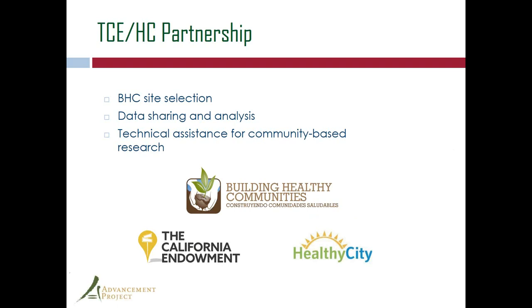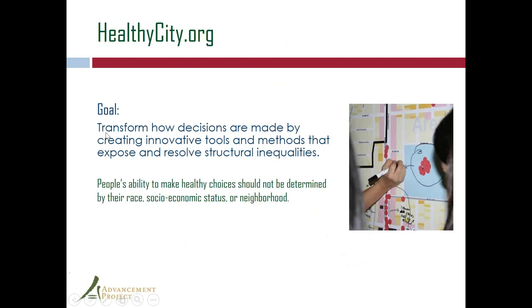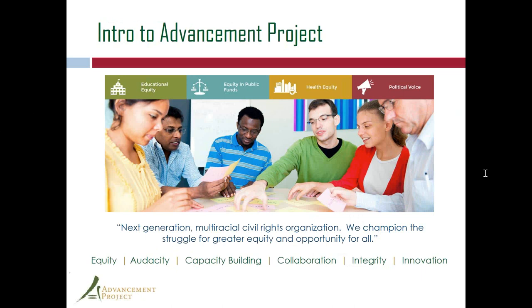So just briefly, an introduction to Advancement Project. We are a next-generation civil rights organization where we champion the struggle for those that are impacted by economic and racial inequity. Our work in California really is around transforming our public systems and public institutions to ensure that they're making their best efforts to serve low-income communities of color. We do this through rigorous research analysis — we have an internal centralized research capacity — as well as support around policy and advocacy development. We have a legislative office based in Sacramento, so we co-sponsor and move legislation. We also provide capacity-building support to advocates, coalitions, and leaders in the community.